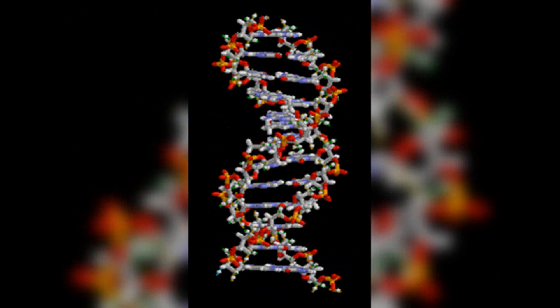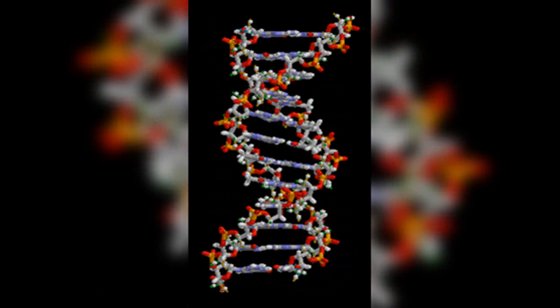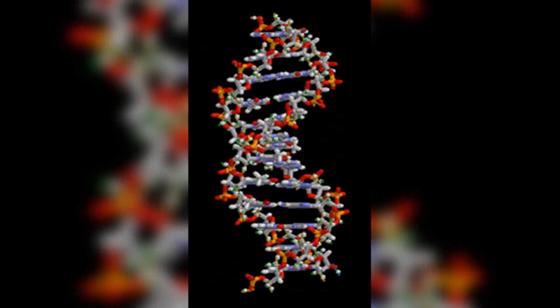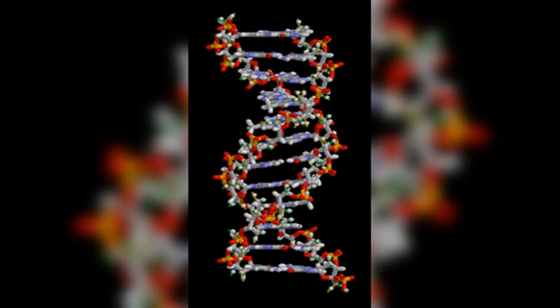Other animals: non-coding DNA is present in the genomes of other animals, including mammals, birds, reptiles, fish, and insects. The proportion of non-coding DNA can vary among different species.